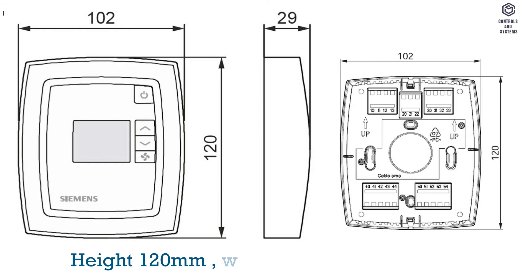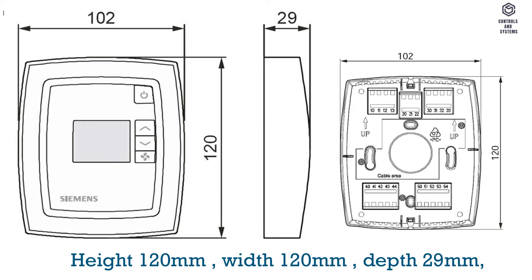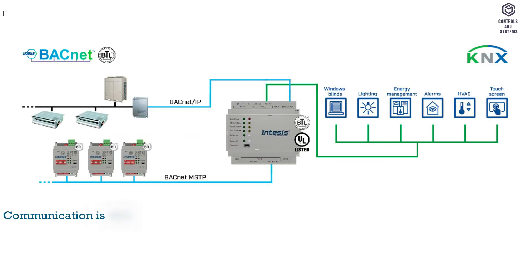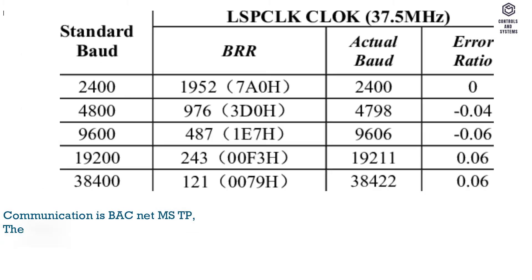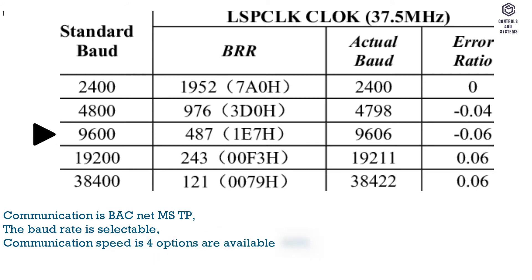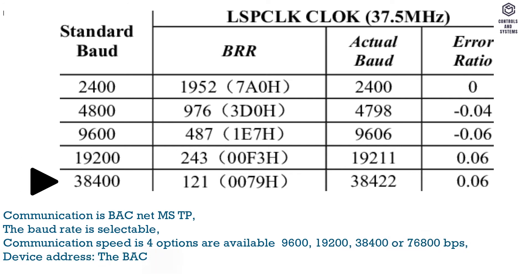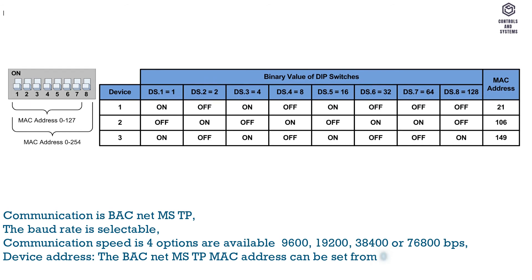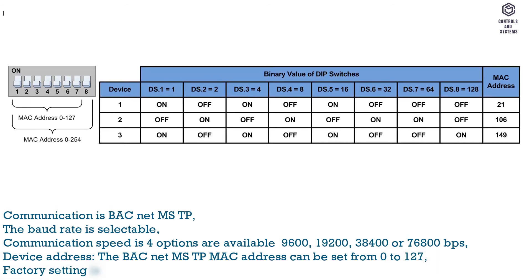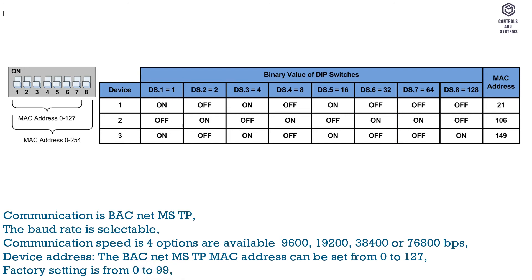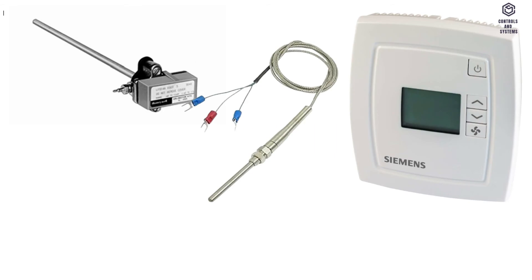Dimensions: height 120 mm, width 120 mm, depth 29 mm. Communication: BACnet MS/TP. The baud rate is selectable — four communication speed options are available for the RDB 160BN: 9600, 19200, 38400, or 76800 bits per second. Device address: the BACnet MS/TP MAC address can be set from 0 to 127; factory setting is 0 to 99.